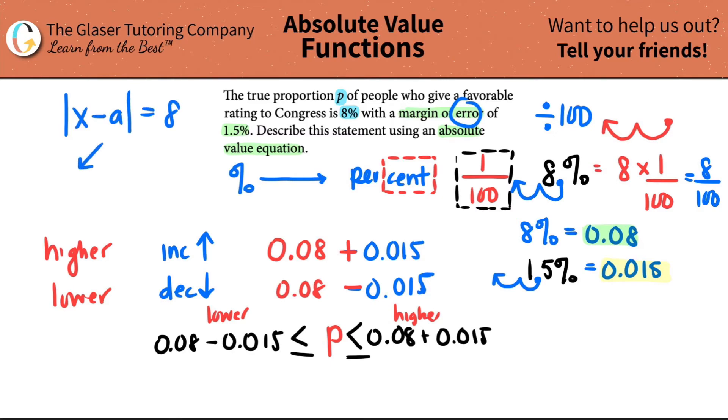Remember back when we did questions where it was like X minus a equals eight. And then we broke this up into being equal to eight and negative eight, they never show you the negative eight. This is the same exact idea here. They're never going to show you the lower number. So if you're putting it in absolute value notation, you are not including the lower limits. You are only including the higher limits.